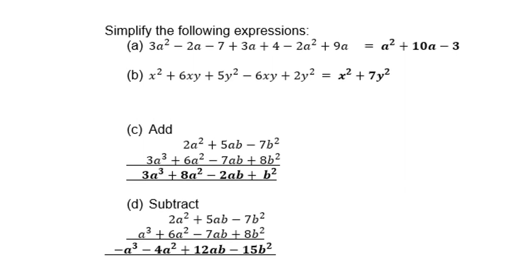Let's simplify the following expressions. (a) 3a squared minus 2a minus 7 plus 3a plus 4 minus 2a squared plus 9a. If you collect the 3a squared minus 2a squared, you get a squared. Then negative 2a plus 3a plus 9a gives you 10a. And then minus 7 plus 4 gives you minus 3. Then (b) x squared plus 6xy plus 5y squared minus 6xy plus 2y squared. x squared is on its own. 6xy and minus 6xy cancels. And 5y squared plus 2y squared gives you 7y squared.